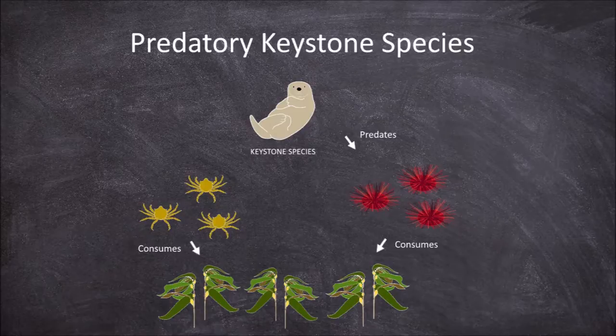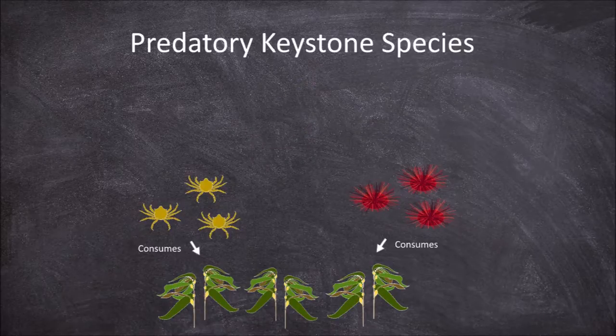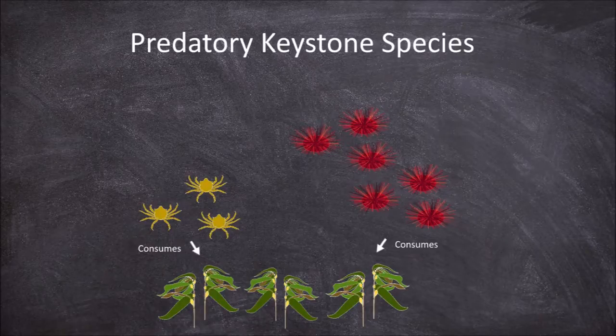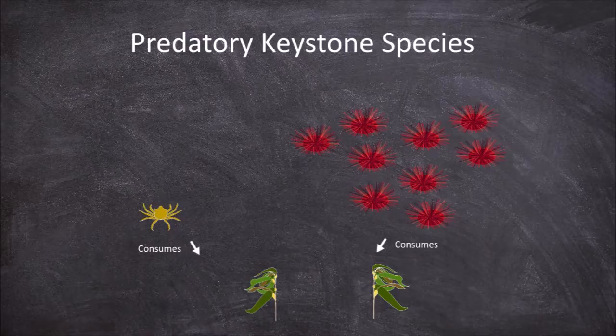If the keystone species the sea otters were removed, the population of sea urchins would increase and in turn consume too much kelp, affecting the other species living and feeding on the kelp.